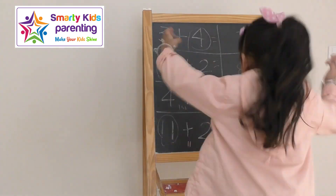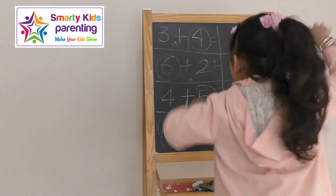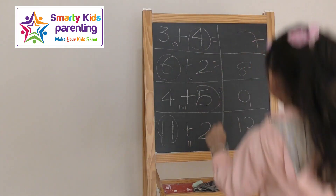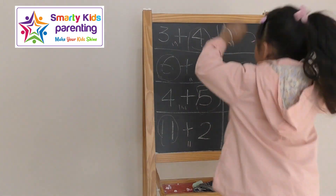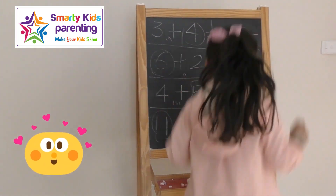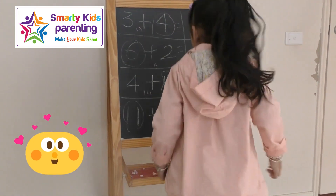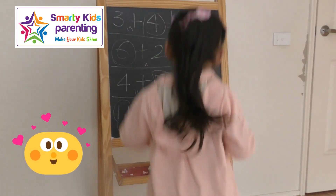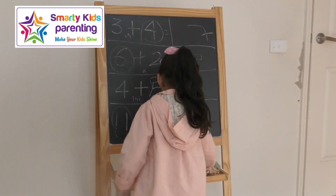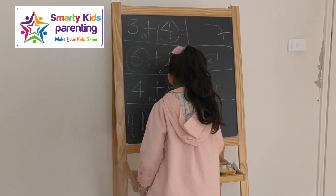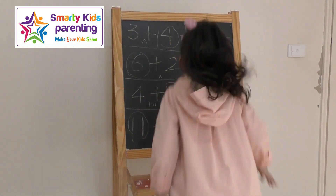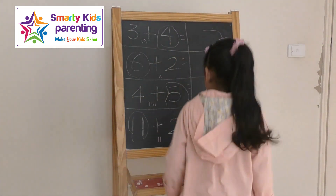Three plus four equals seven. Six plus two equals eight. Five plus two... Four plus five equals nine. Eleven plus two... Eleven plus two equals thirteen.